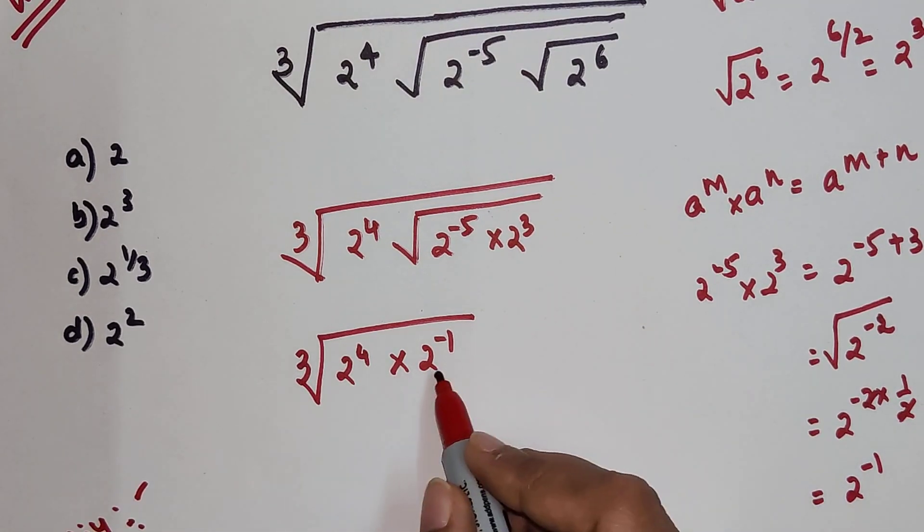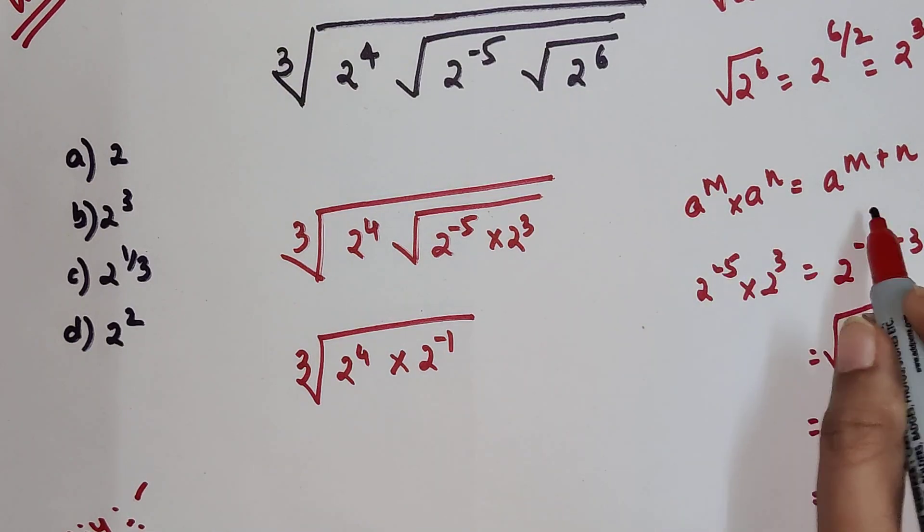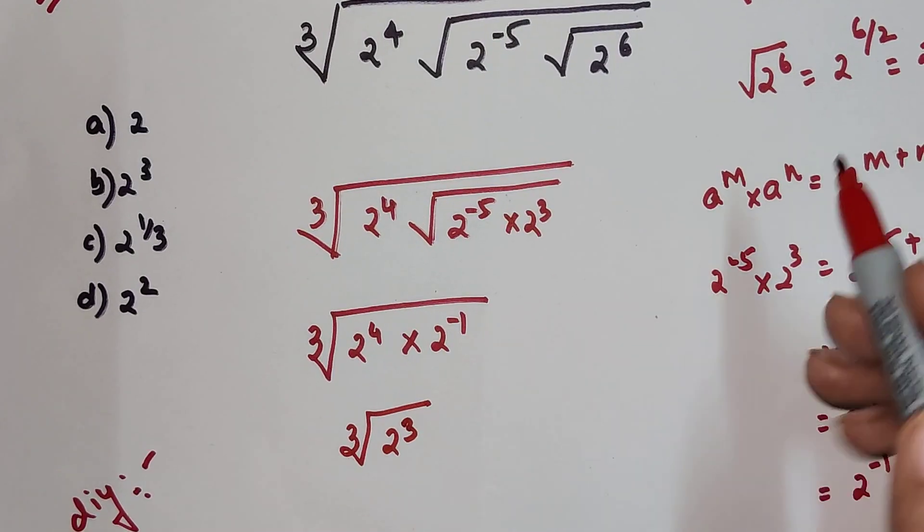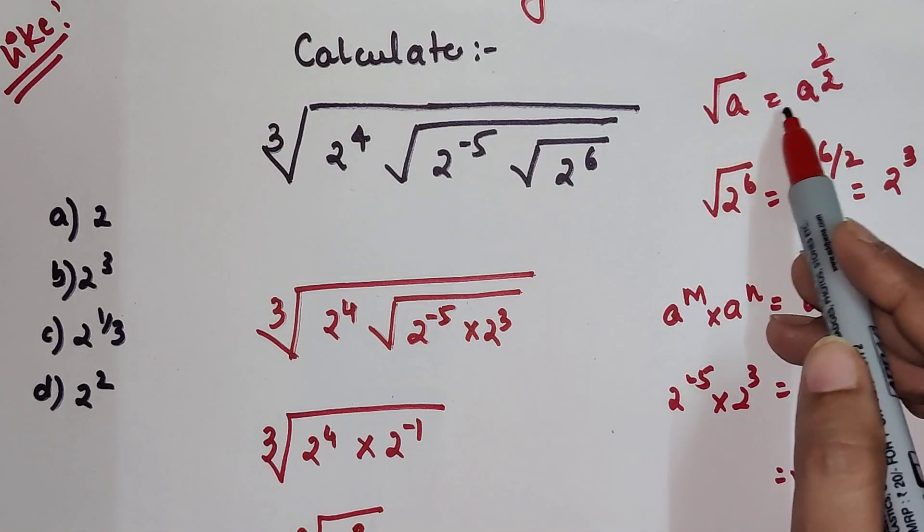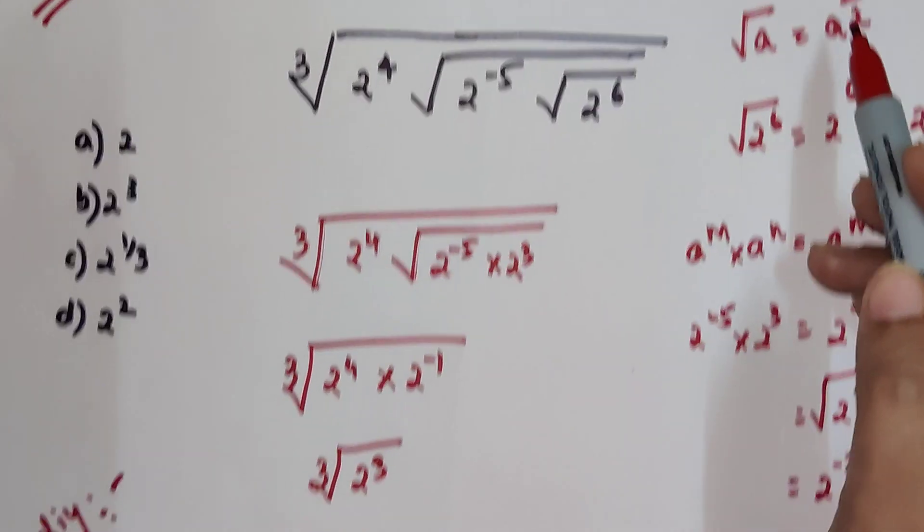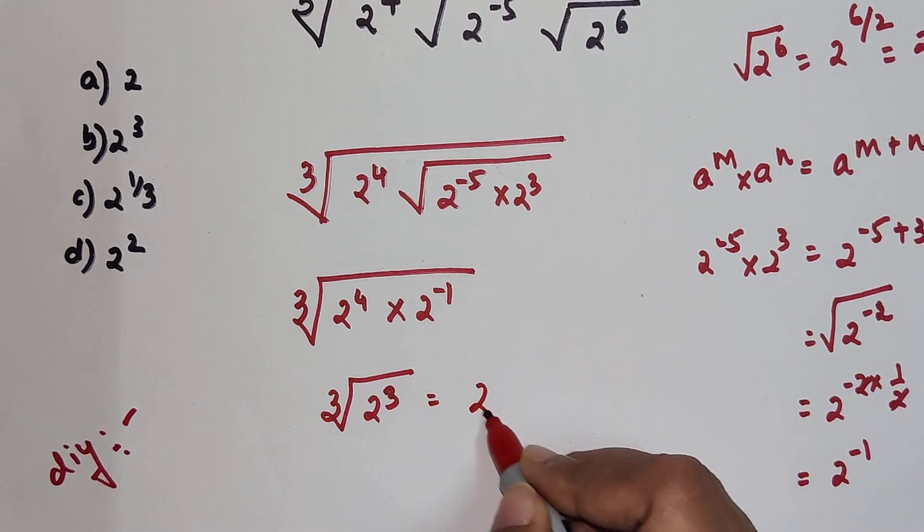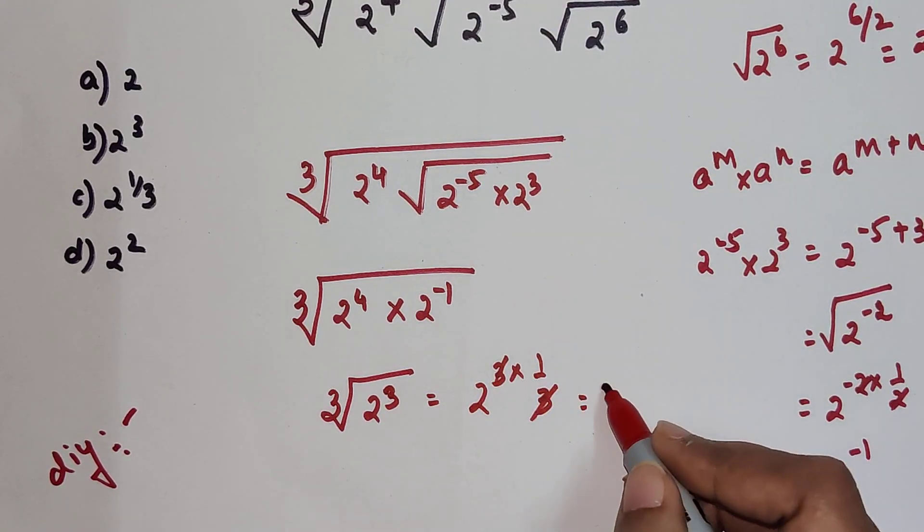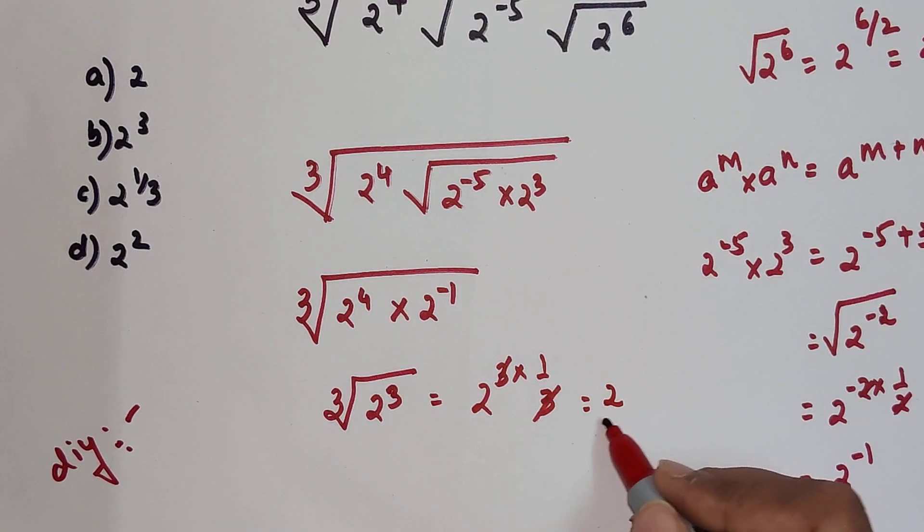So now here we know that again we can apply the same rule. So 2 raise to 4 minus 1 will now become what? Cube root of 2 raise to 3. Now just as there was a square root and this becomes 1 upon 2, so cube root will now become 2 raise to 3 to 1 upon 3. So the 3's are cancelling.